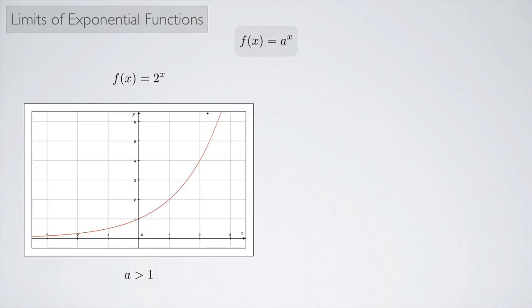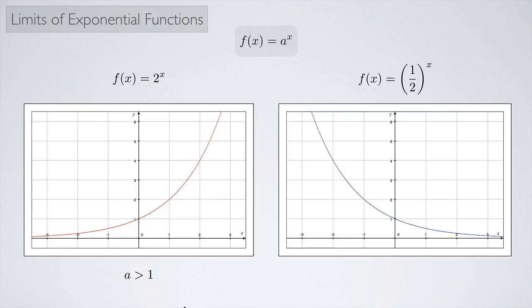When a is greater than 1, the graph slopes upward. On the other hand, if I have f of x equals one-half to the x power, I get a graph that is downward sloping. Again, it passes through 1 on the y-axis and still has a horizontal asymptote on the x-axis. This is the situation where the constant a is between 0 and 1.